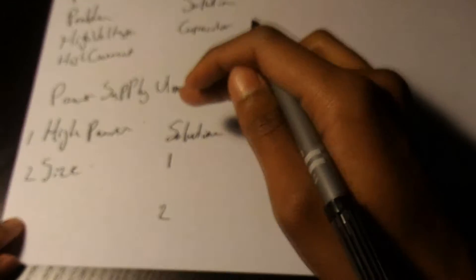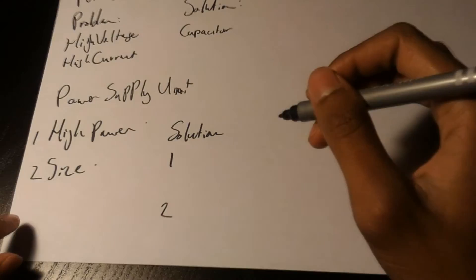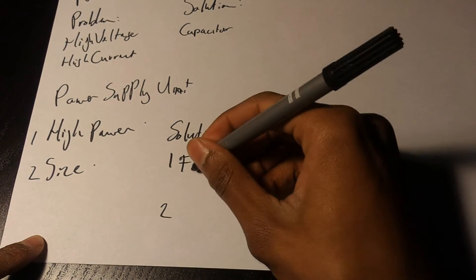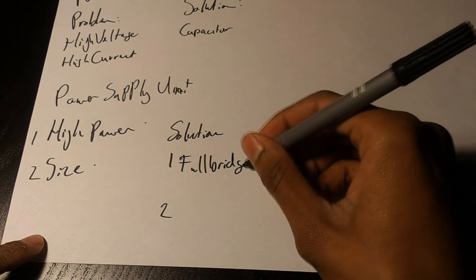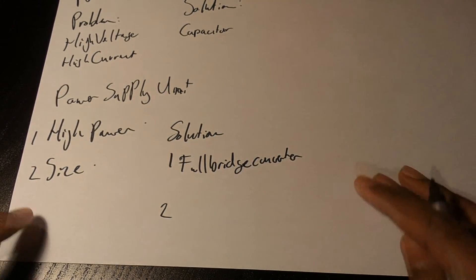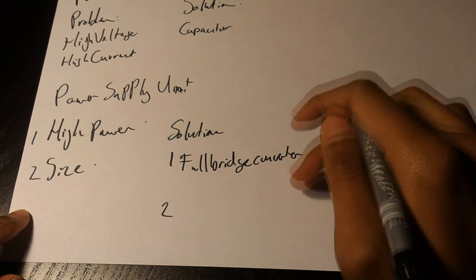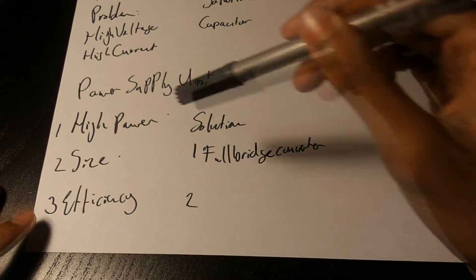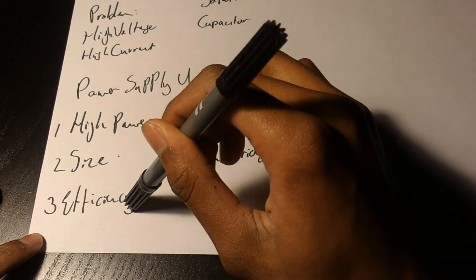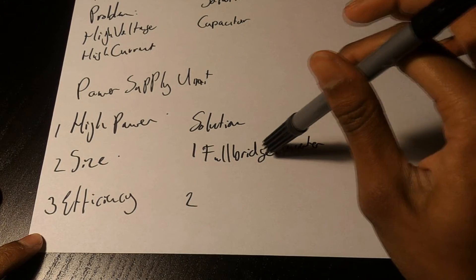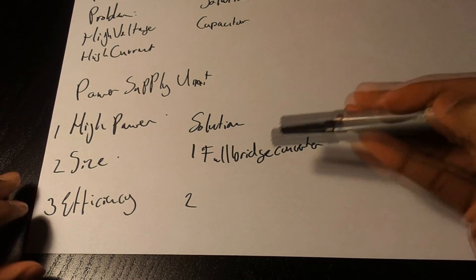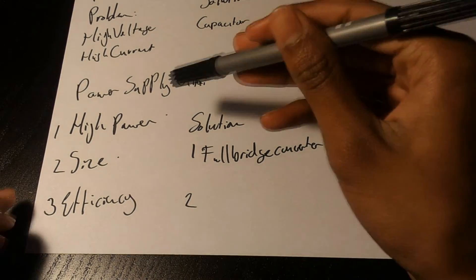The solution to high power problem is going to be in the topology of the power supply we are going to use, and the topology I am going to use is the full bridge converter. This is going to introduce a new problem we are going to take a look at now. The third problem will be efficiency. In order to get high power and shrink it down we will get a pretty low efficiency. Using this topology we will introduce more components which will be the result of the less efficient converter of our power supply unit.